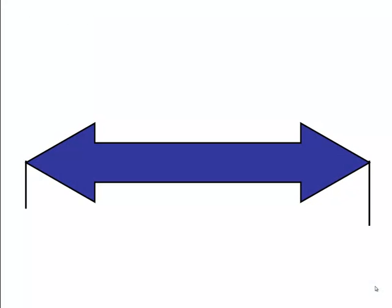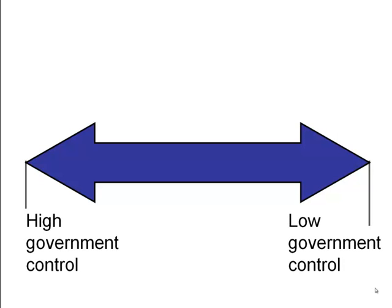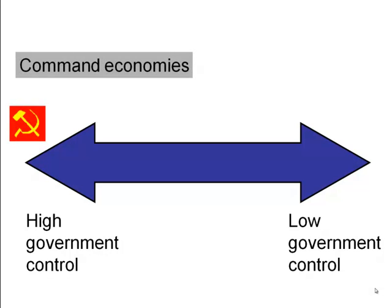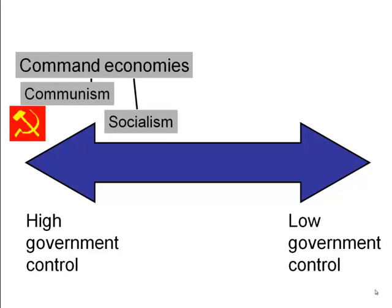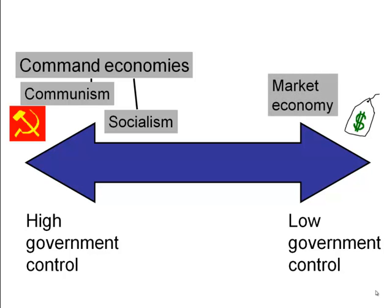To review, we can view economic systems as two ends of a spectrum. The high-government-control end includes command economies, with two examples: communism and socialism. The opposite end, with low government control, is the market economy. Somewhere in the middle sits the mixed economy.